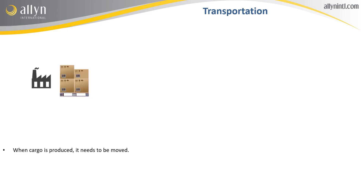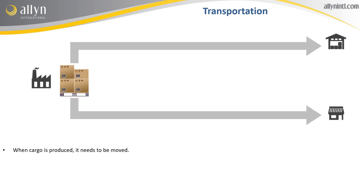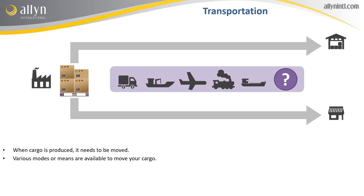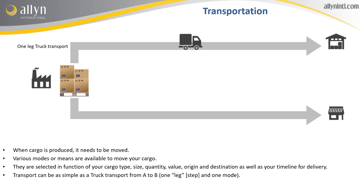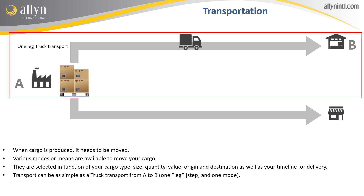When cargo is produced and ready, it needs to be moved. To do so, various transportation modes are available — a transportation mode being a means of transport, like for example truck, air, or ocean. You will select one of them in function of your cargo type, size, quantity, value, origin and destination, as well as your timeline for delivery. A transport can be as simple as a truck transport from A to B — a one-leg, one-mode transport.